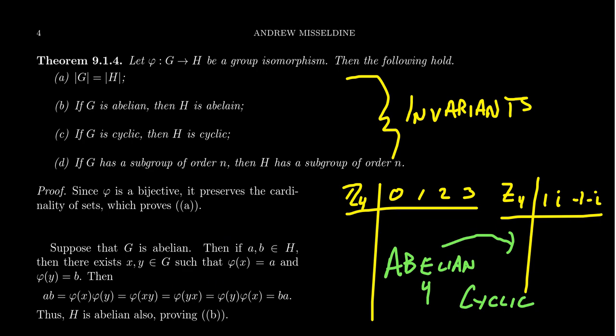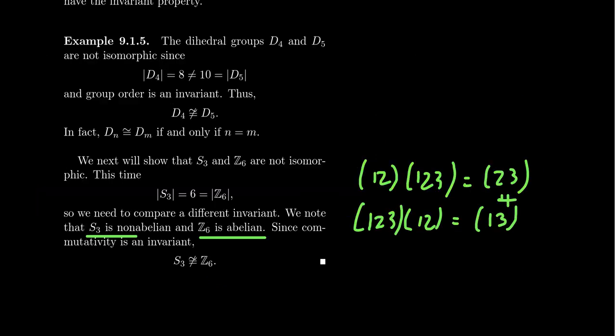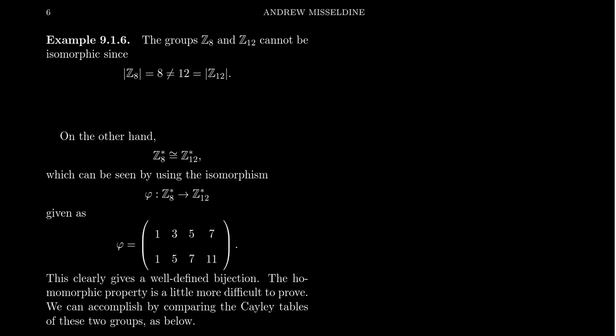I want to be clear that this list of four invariants is not comprehensive. These are all necessary conditions for two groups to be isomorphic, but if all four conditions are the same between two groups, they could still be non-isomorphic. It's important to develop a good understanding of invariants. For example, Z8 and Z12 are both cyclic and both abelian, but they're not isomorphic because they have different orders — Z8 is order 8, Z12 is order 12. Therefore those two groups are non-isomorphic under addition.